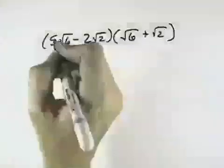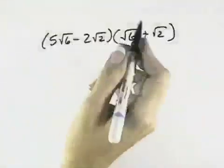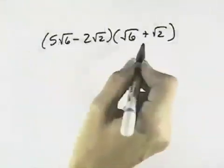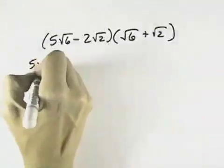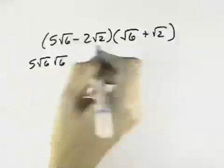I want to perform the indicated operation and simplify. Well, here I have two factors that I can multiply together. So I've got 5 times the square root of 6 times the square root of 6 for the first terms.